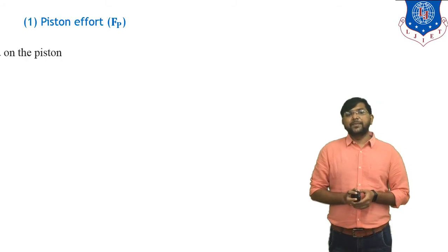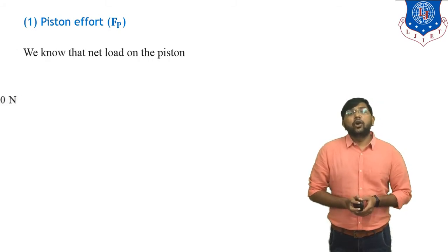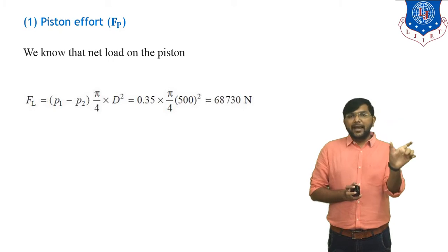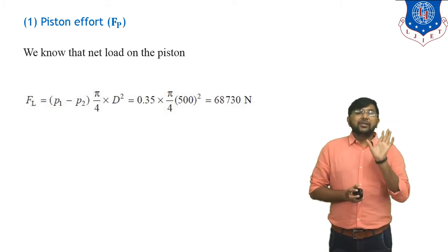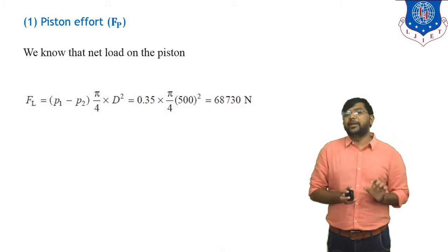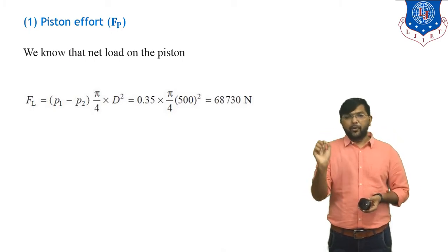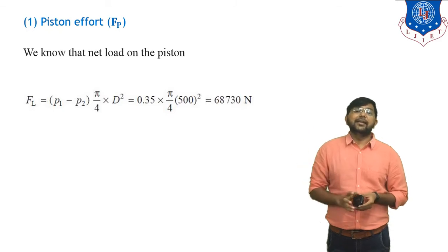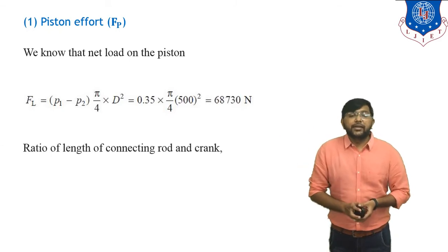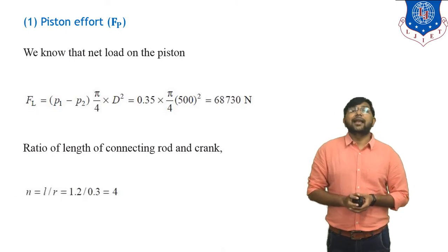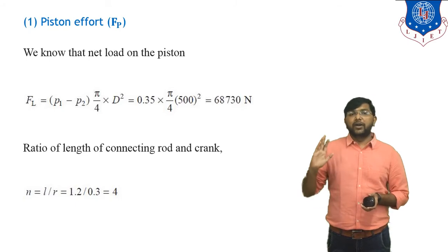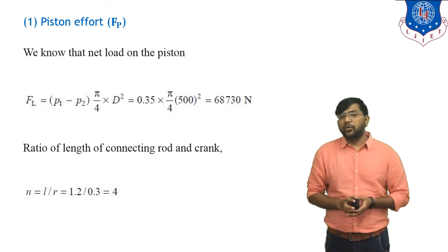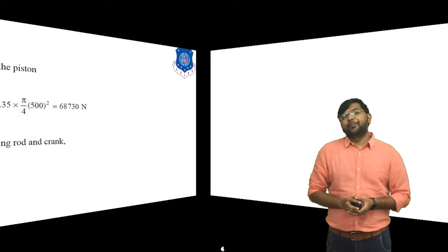First, we calculate the net load on the piston (gas force): F_l = (P1 − P2) × (π/4) × D². Substituting values: 0.35 × (π/4) × 500² = 68,730 N. Next, the obliquity ratio n = L/R = 1.2 / 0.3 = 4.